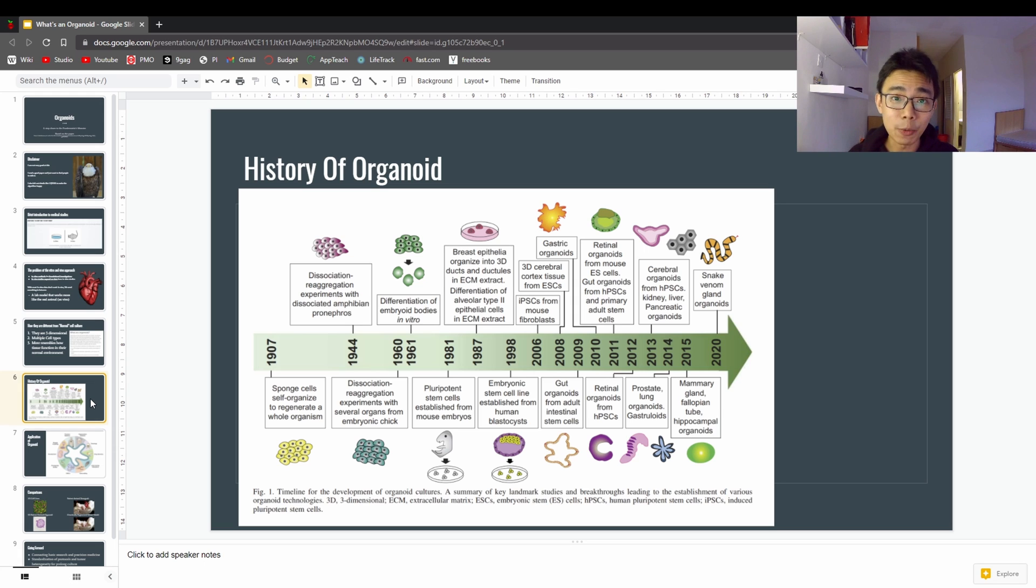So that's in 1981. In 1987, they're able to start to grow something three-dimensional in an ECM extract, extracellular matrix extract. And they can actually get a little bit of differentiation of the cell within the glass in 1987. And from 1998 onwards, they will just get more and more and more different cell types.